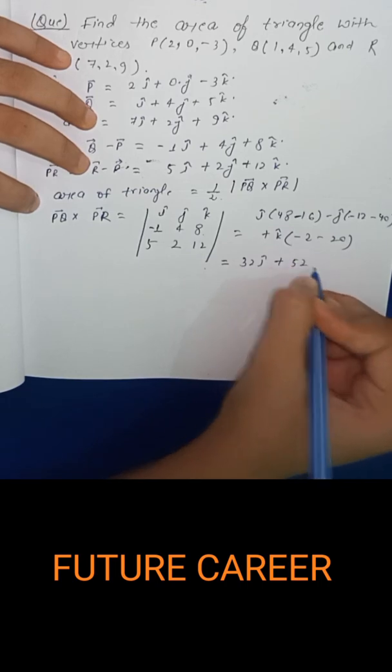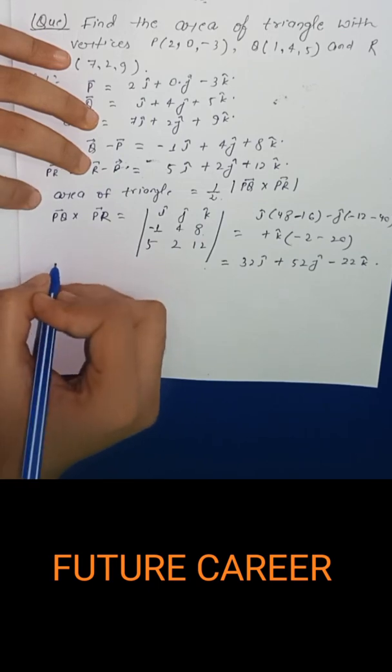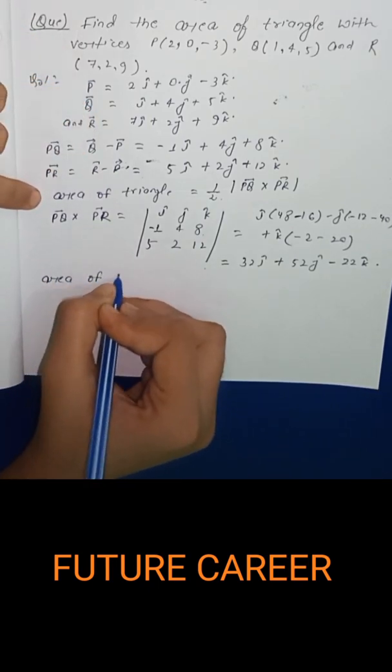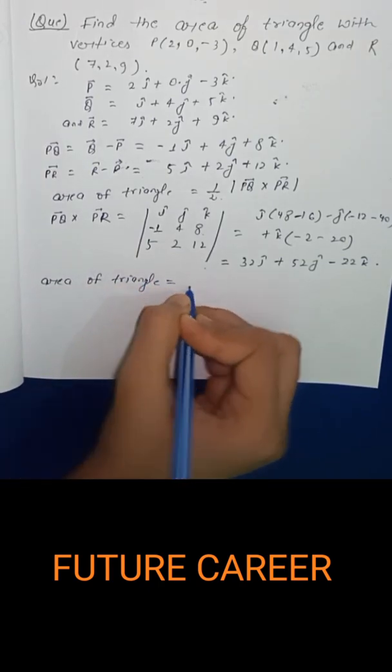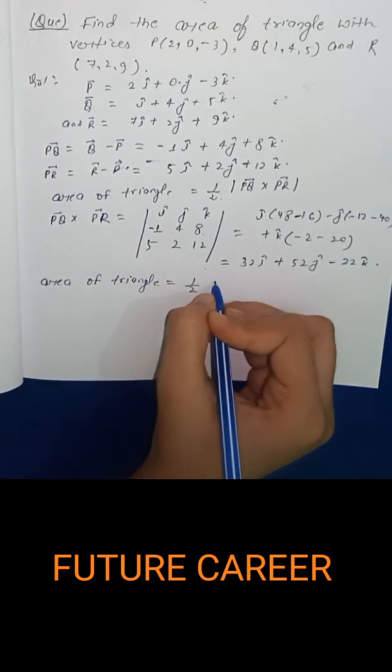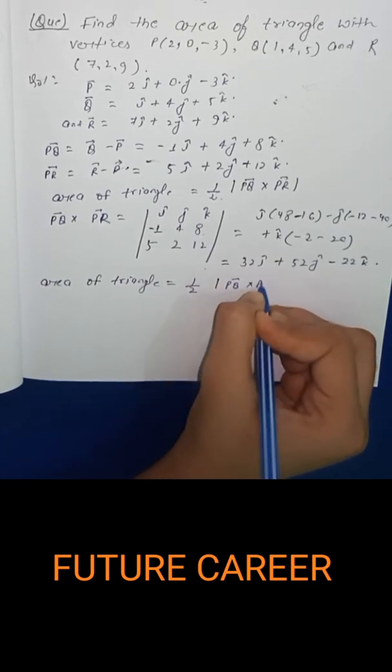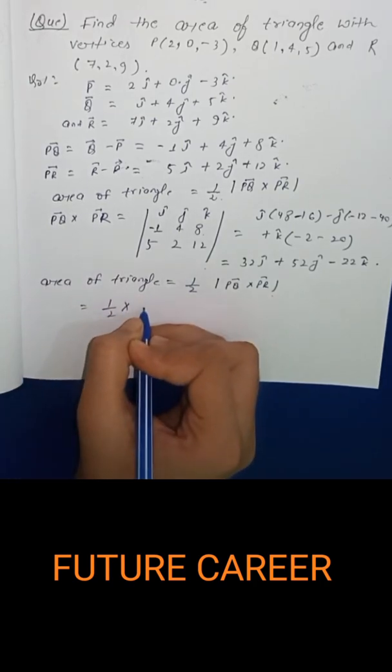So area of triangle is equals to half into magnitude of PQ vector cross PR vector, which is equals to half into under root.